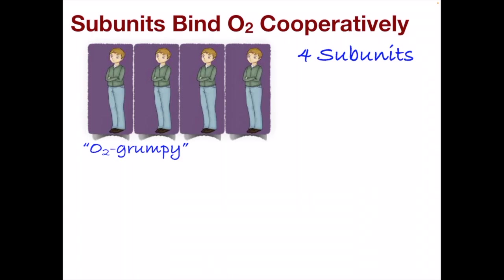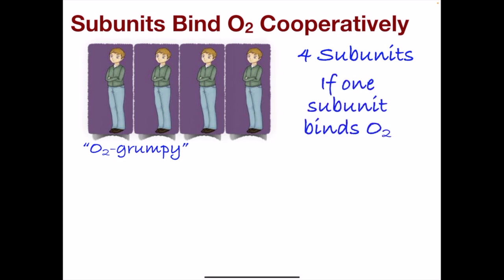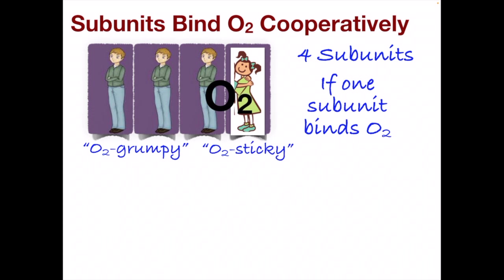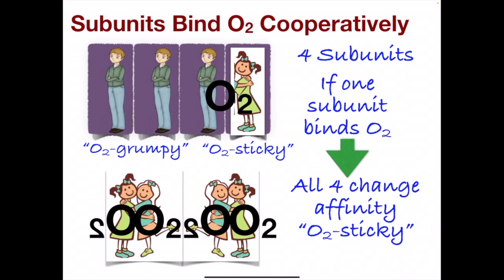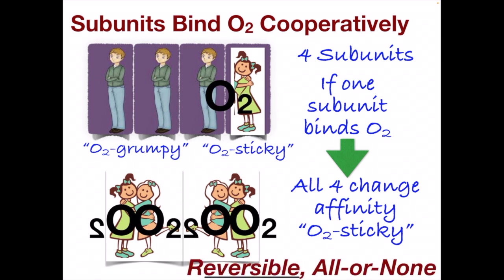As we said, the four subunits bind oxygen cooperatively. You can think of them like four mean girls whose typical state is O2 grumpy. But as soon as one of them finds a match and binds to oxygen, all four mean girls flip and they're all high affinity all of a sudden, so that everyone is bound to oxygen. That affinity flips cooperatively — that's the all-or-none and the reversibility.